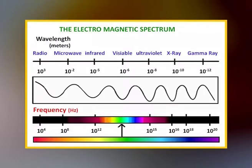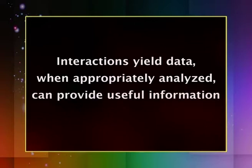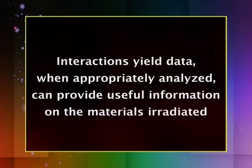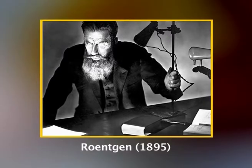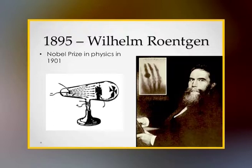X-rays are short wavelength electromagnetic radiations that can undergo various interactions with matter. Such interactions yield data which, when appropriately analyzed, can provide useful information on the materials irradiated. The discovery dates back to 1895 when Röntgen, working in a dark German laboratory, discovered X-rays accidentally while doing some basic research in physics using a cathode ray tube. He found that the device he was using produced X-rays, and by doing basic scientific research on it with no specific practical goal, William Röntgen discovered one of modern medicine's most useful diagnostic tools and won the first Nobel Prize in Physics in 1901.